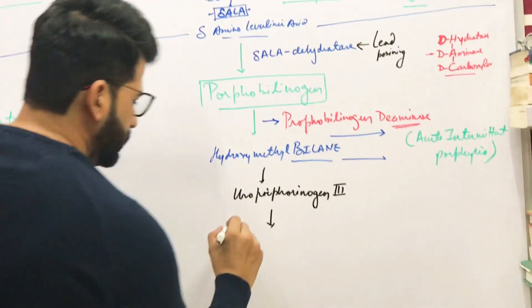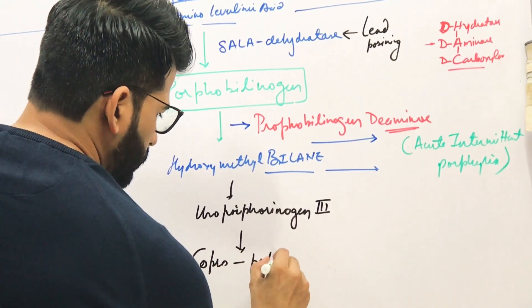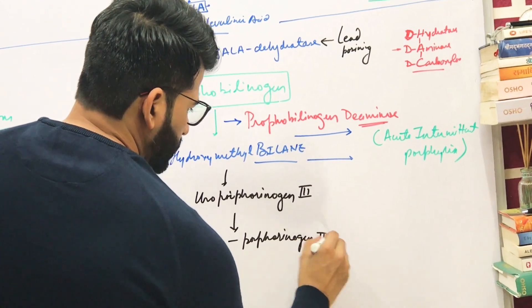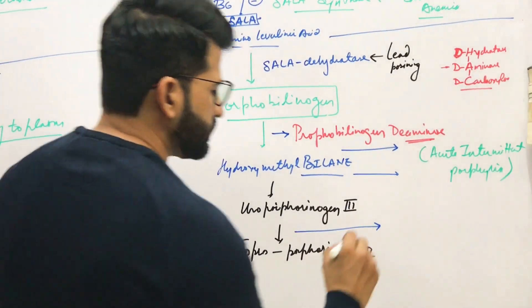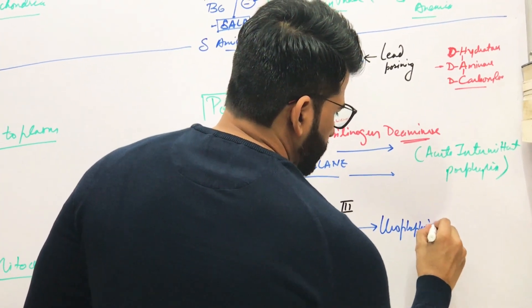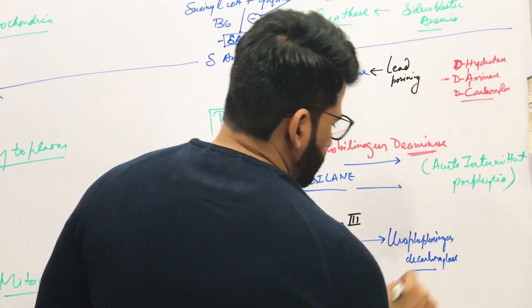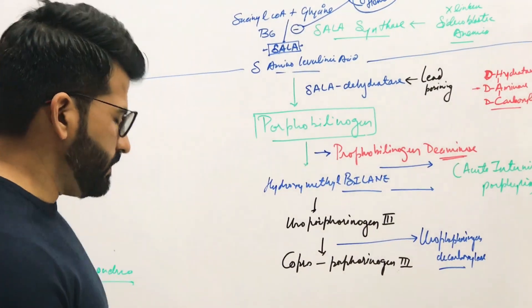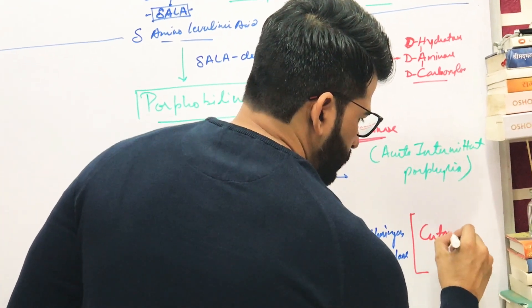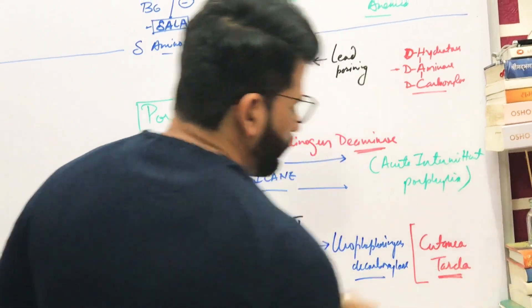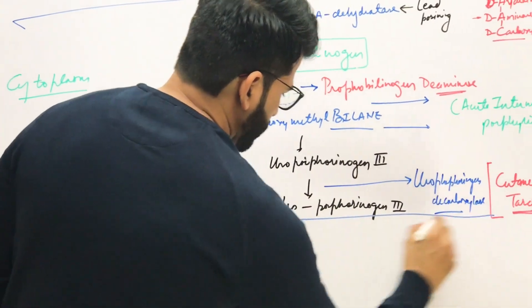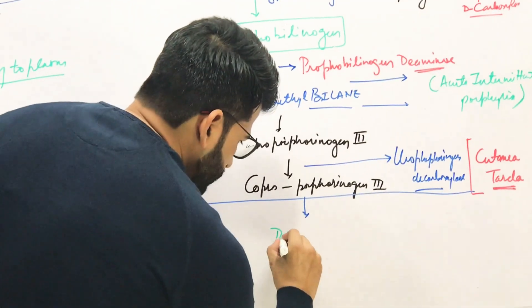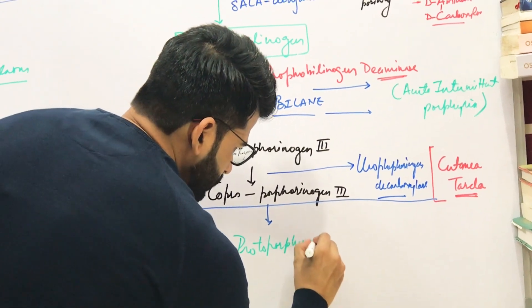Hydroxymethylbilinogen will convert into uroporphyrinogen III. This uroporphyrinogen III will convert into coproporphyrinogen III. The enzyme required here is uroporphyrinogen decarboxylase. If there is any defect of this enzyme, the patient will develop porphyria cutanea tarda.